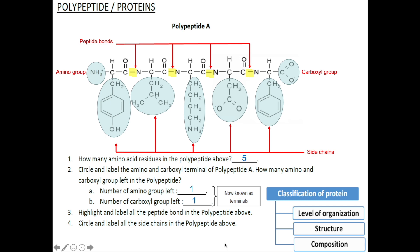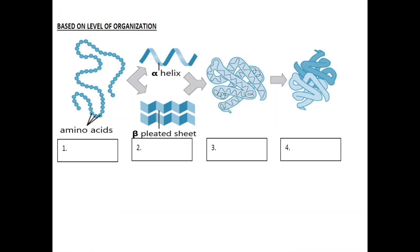There are three ways to classify a protein or polypeptide: first, by looking at their level of organization; second, by looking at their structure; and finally, by looking at their composition. There are four levels of organization: primary level, secondary level, tertiary level, and quaternary level. For each level, you need to know what we are looking at and what bonds are involved.